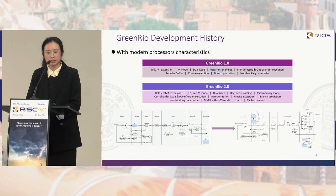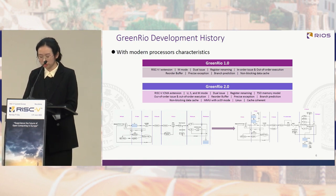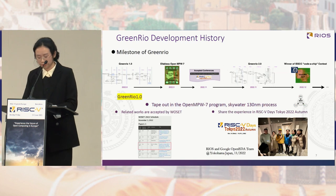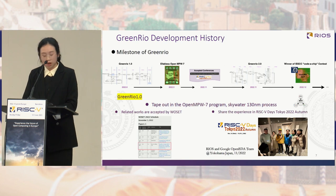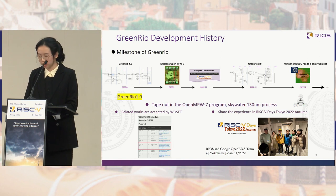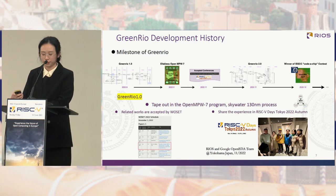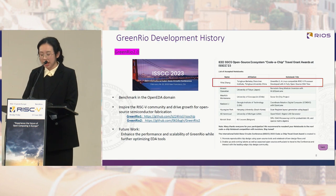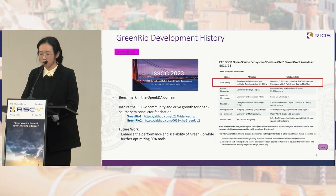These two tables summarize the features of GreenRail 1 and GreenRail 2. GreenRail 2 adds more hardware support allowing for running applications. We demonstrated GreenRail 1 in the Fabulous Open MPW 7 program. Related work was accepted at the Workshop on Open Source EDA Technology by ICCAD as well as RISC-V Days Tokyo Autumn. GreenRail 2 has won the ISSCC Coda Chip competition and is becoming a benchmark in the open EDA domain.